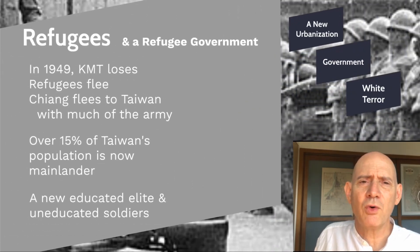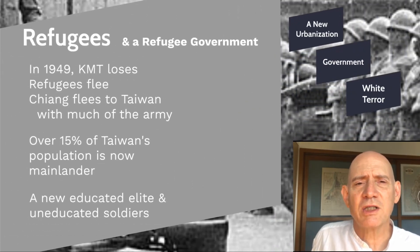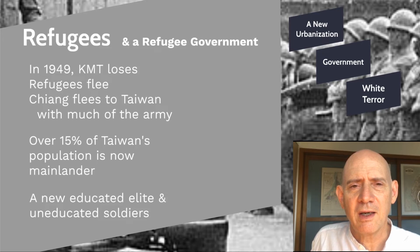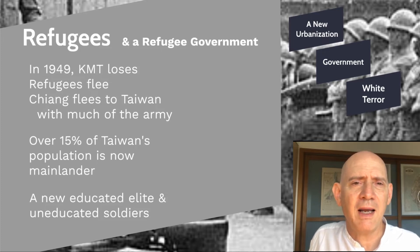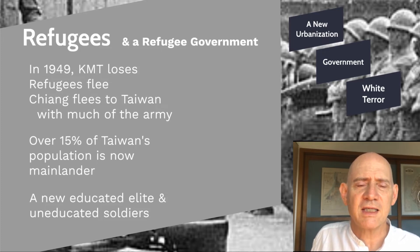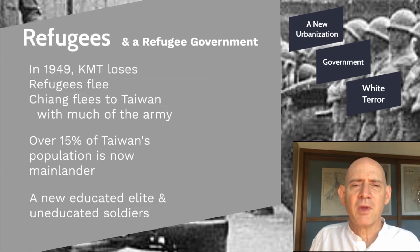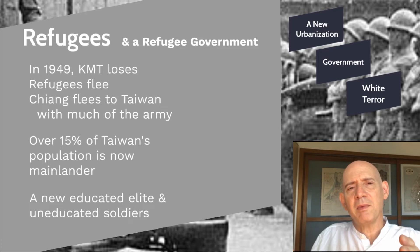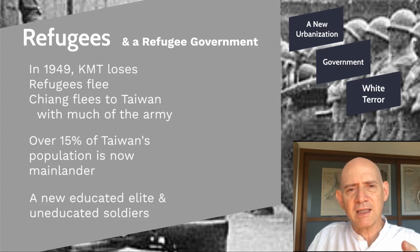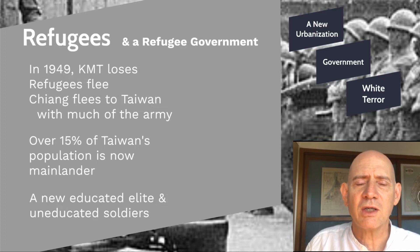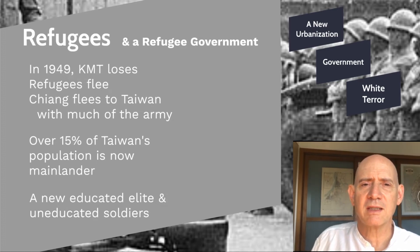The new urbanization is mainly of mainlanders. You don't see too many Taiwanese moving into urban areas during this period because so many mainlanders have flooded the cities. Taiwanese tend to stay in small towns and out in the countryside. In Taipei, maybe about 40% of the city is now mainlander, and what's left of the Taiwanese are mainly long-time residents of Taipei.